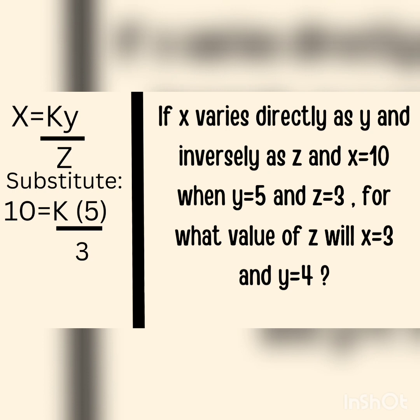Since it says x varies directly as y, it'll be x equals ky. But it also says inversely as z, so it'll be x equals ky over z. Then, next is we substitute the numbers: 10 equals k times 5 over 3.